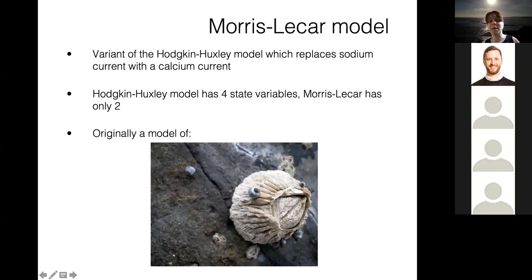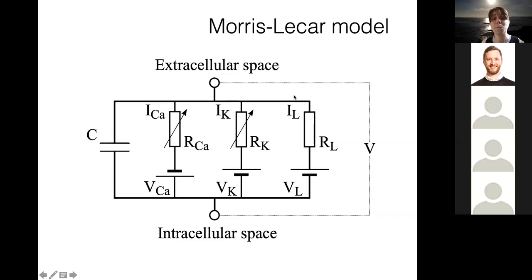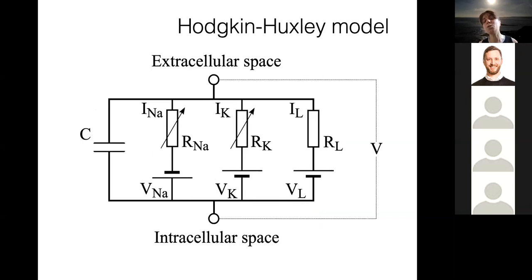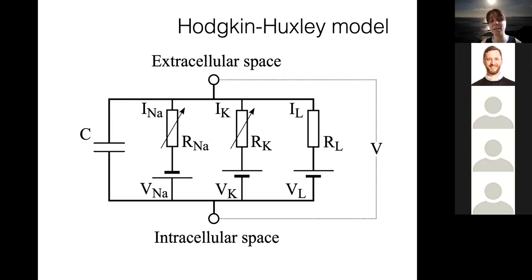The main currents that Hodgkin and Huxley modeled were mediated by sodium and potassium, and everything else was represented by a leak current. We know, especially those of you who are biologists, that there are many other ion channels and currents in various neuron cells. This initial version of the model represented all of that by this leak, which could be broken apart and detailed in various ways, made as complicated as one might want.